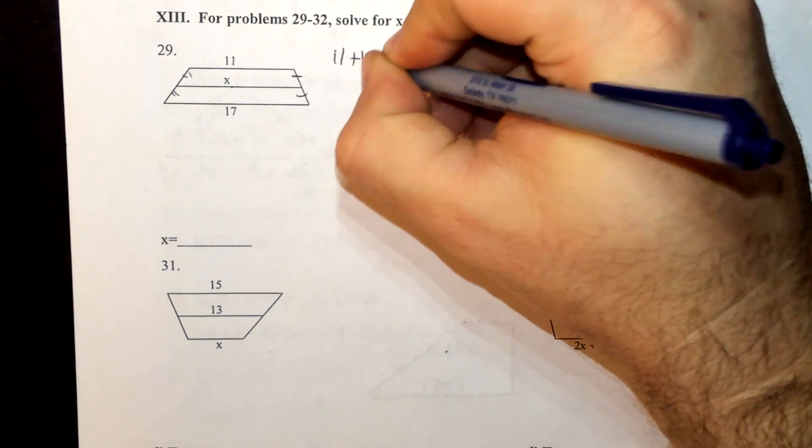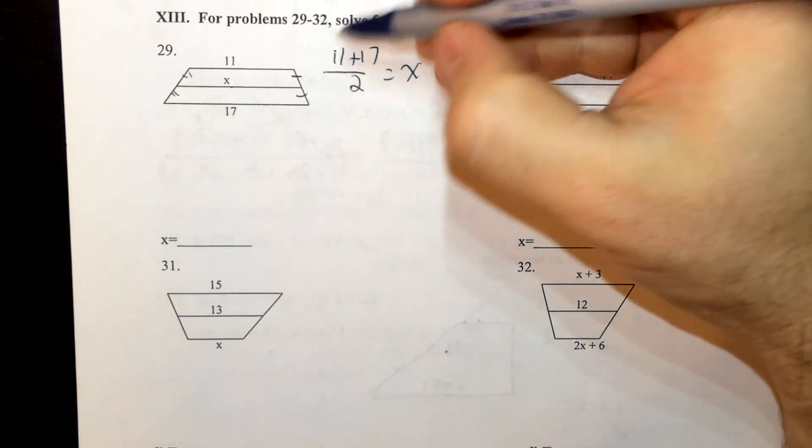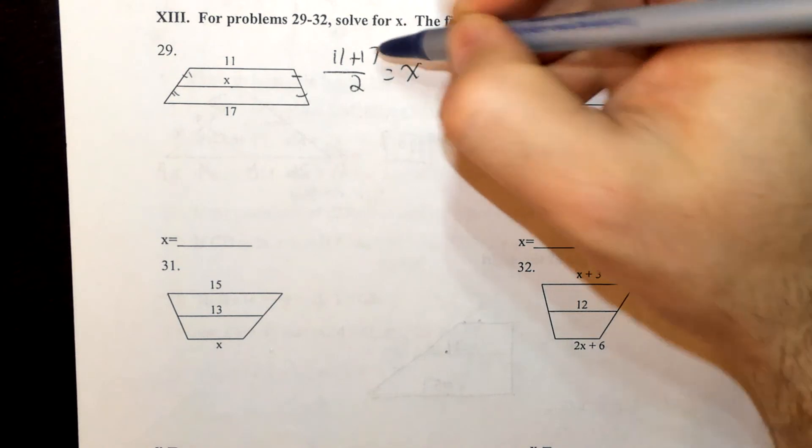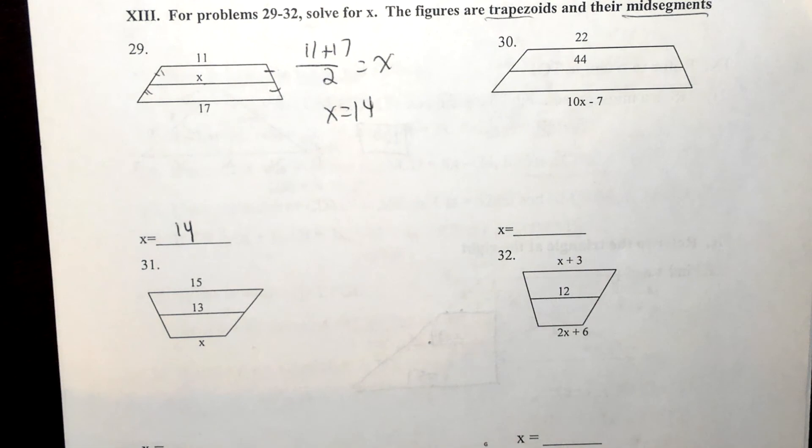So it's just 11 plus 17 divided by 2 equals x. Well, 11 plus 17 is 28, divided by 2, x equals 14. Stick it in the right spot, and we are done.